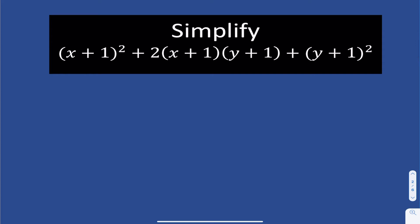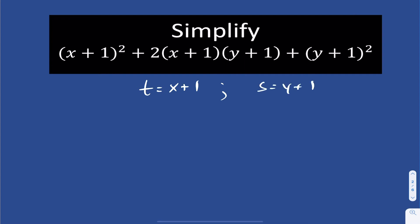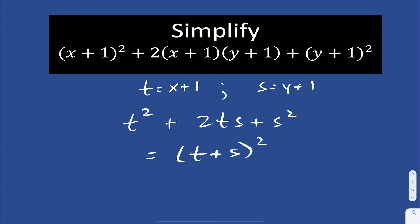With this next problem, they want us to simplify this expression. If you substitute t for x plus 1 and s for y plus 1, this expression becomes t squared plus 2ts plus s squared, which factors into the quantity t plus s, squared.